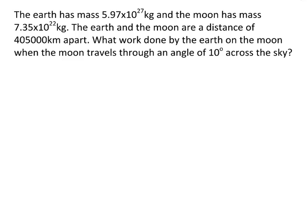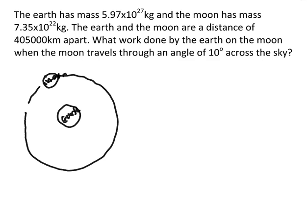Our last example: we know the mass of the earth and the mass of the moon. Here's the earth and here's the moon, and the moon is orbiting around the earth in a circle. We know the distance between them. We're trying to find out the work done by the earth on the moon when the moon travels through an arc of about 10 degrees — so what is the work done by the force of gravity on the moon as the moon moves through that arc?